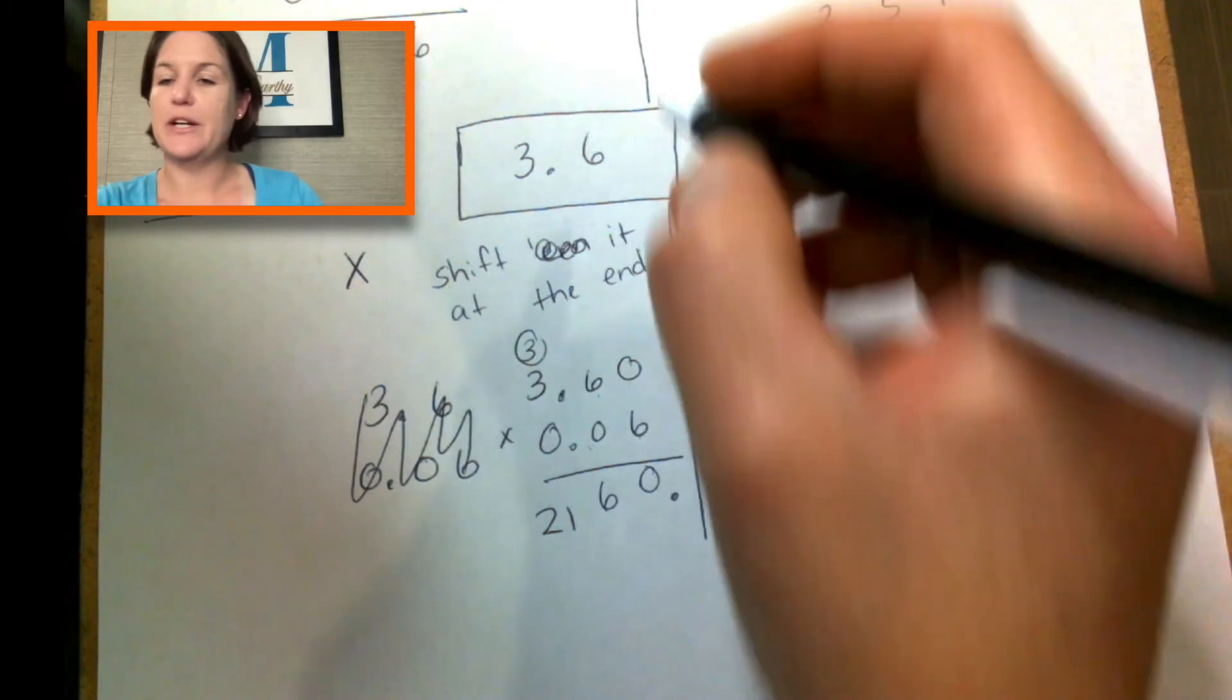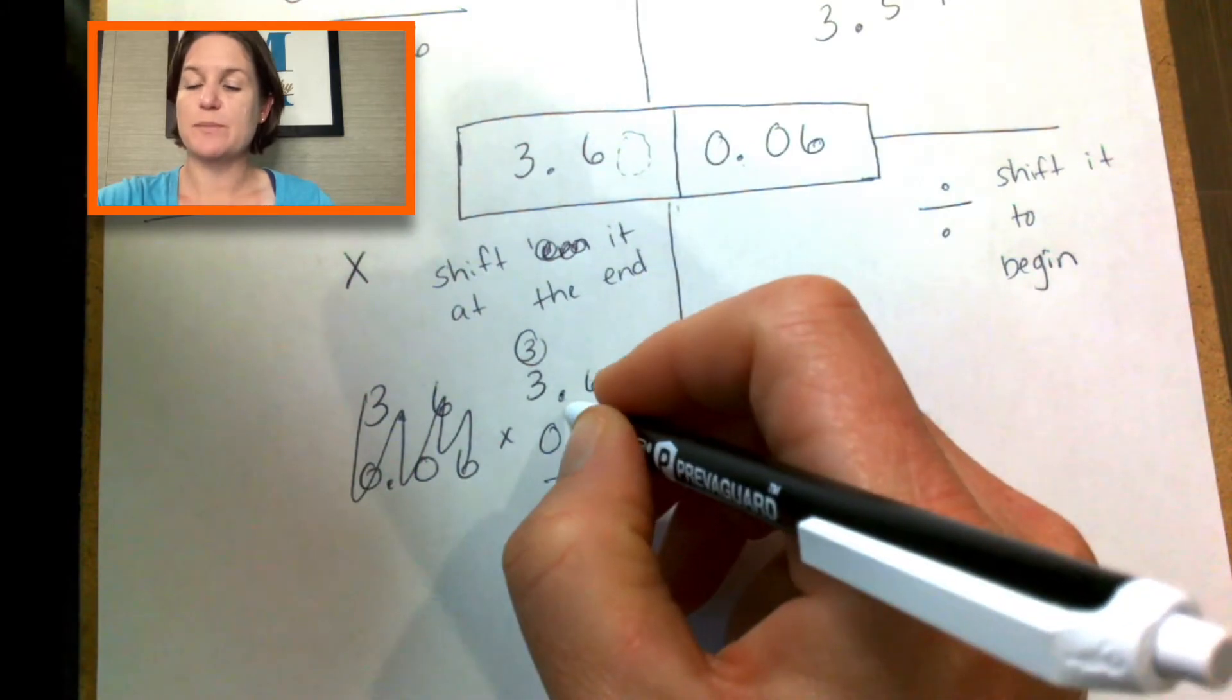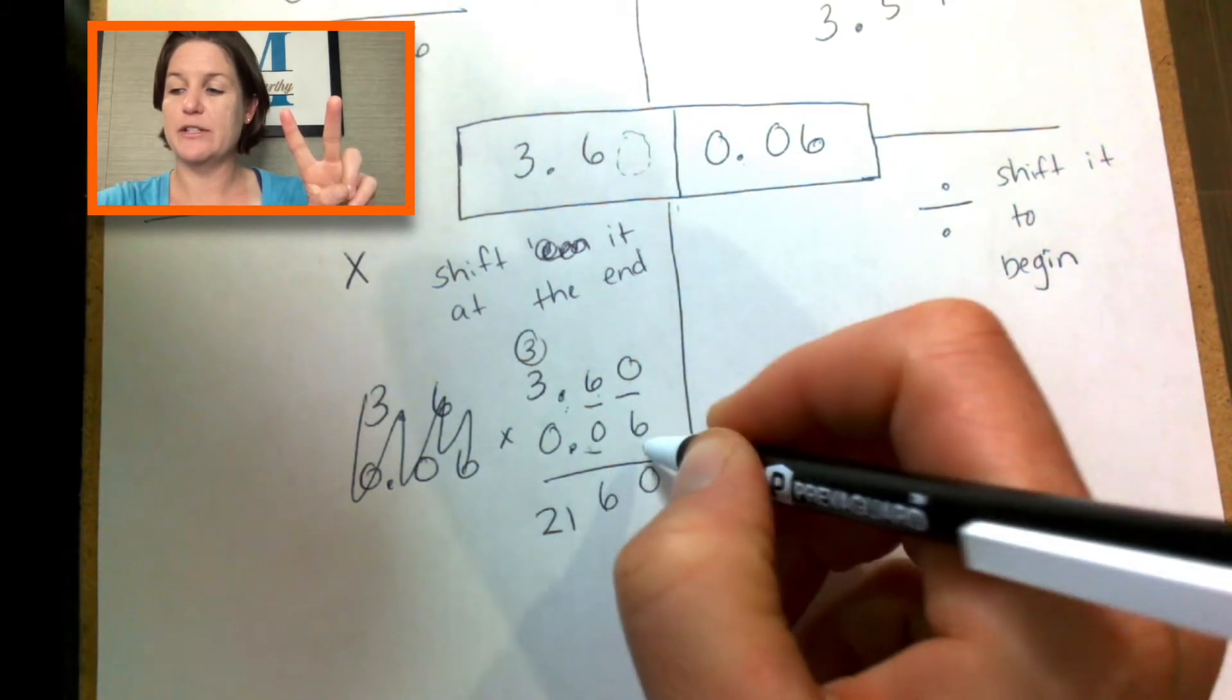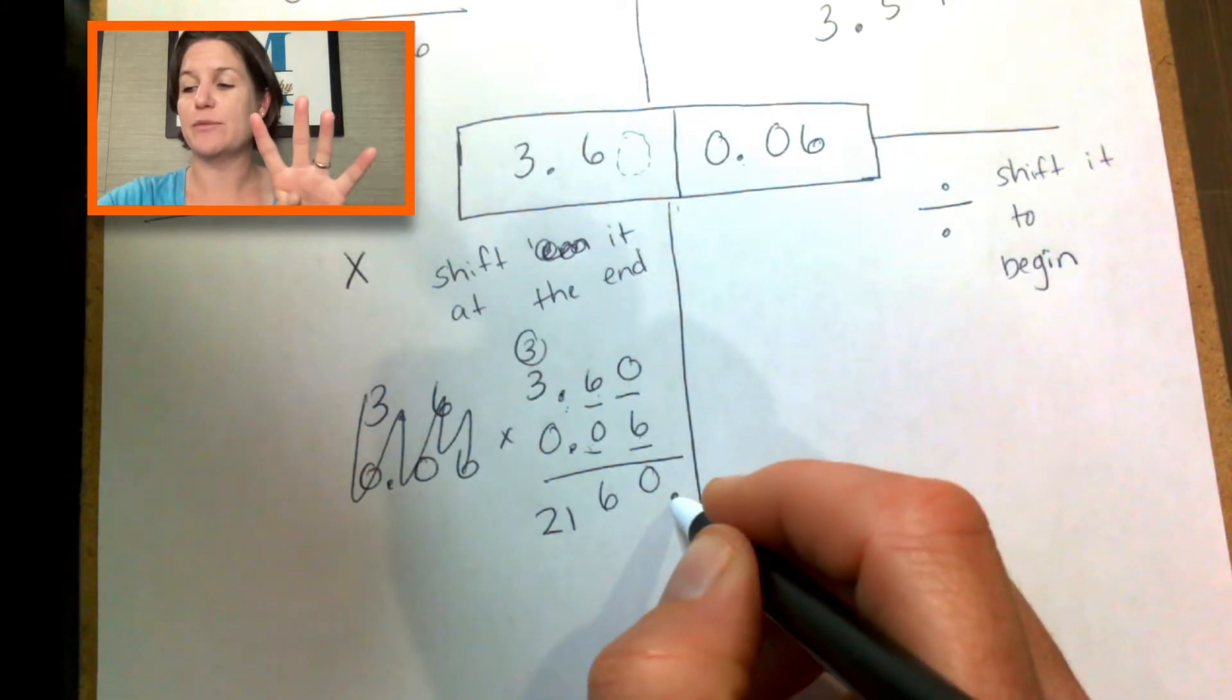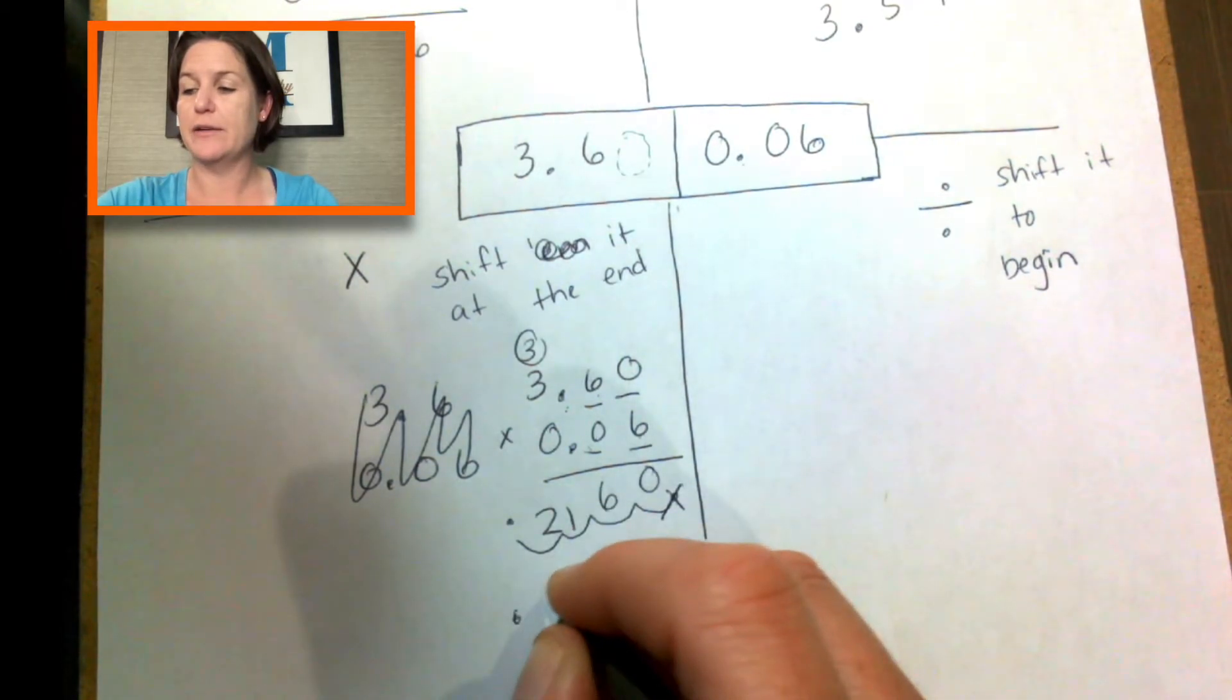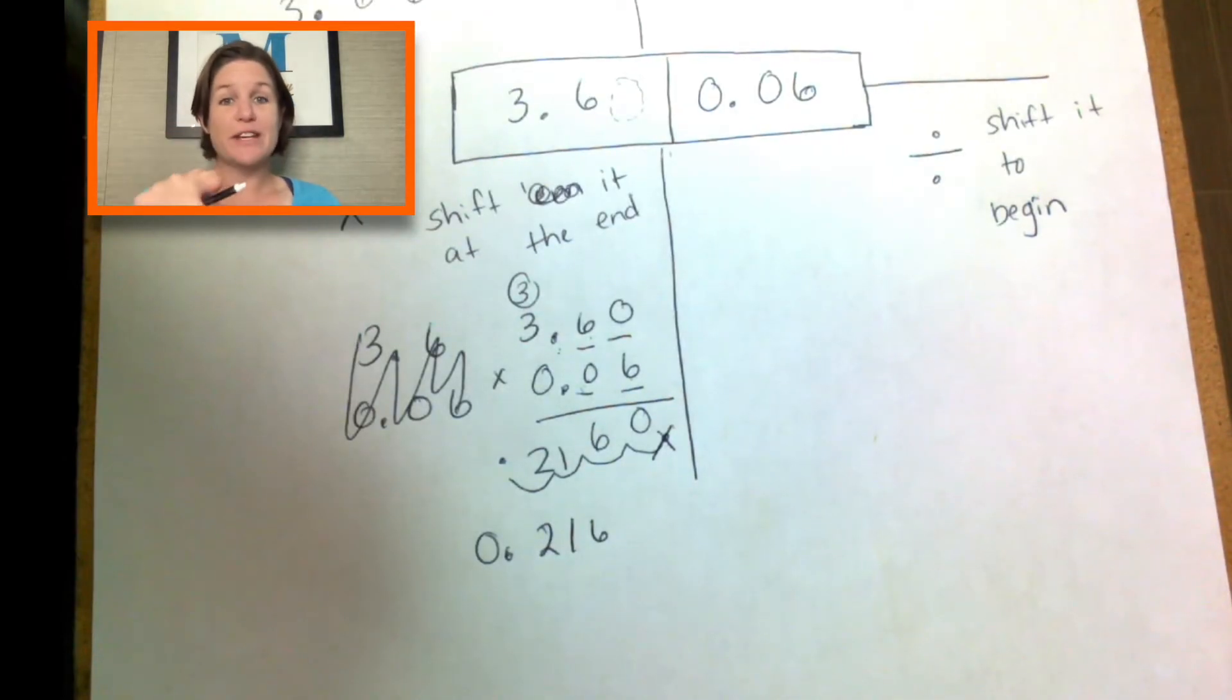And now we're going to shift that decimal at the end. What we do, now remember here, I put a zero on the end right there. What we're going to do is count the digits behind the decimal. We have, here's a decimal and we have one, two digits behind the decimal there. Here's our other decimal and we count our digits. So three, four, that's four digits total that are behind the decimal. And that's how many times we shift it. One, two, three, four, out with the old decimal in with the new. And when we rewrite it, it looks like that or 0.216.